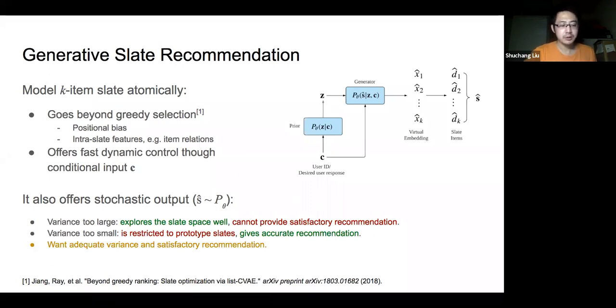However, this generative approach is stochastic during training and inference, and this brings an additional challenge. Specifically, increasing the variance would more effectively explore the variety of items but may sacrifice recommendation accuracy. In the end, we would like to learn a model that can find the balance between sufficient variance and good accuracy.